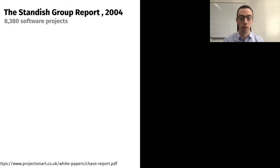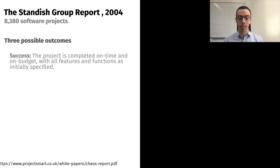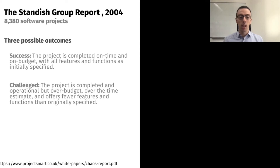In 2004, the Standish Group ran a study on more than 8,000 software projects. What they did was categorize these projects based on their outcome. They had three possible outcomes: projects that succeeded — meaning delivered on time, on budget, and featuring everything that was planned at the beginning.